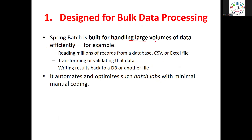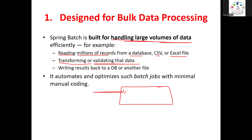Spring Batch is built for handling large volumes of data efficiently — reading millions of records from a database, CSV file, or Excel file. The next step is transforming or validating the data. For example, if a product price is zero in an Excel file, that is an invalid record that should not be processed. That is what transforming or validating the data means.